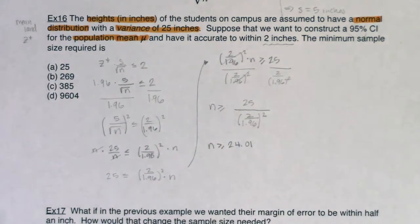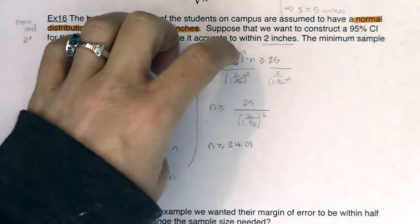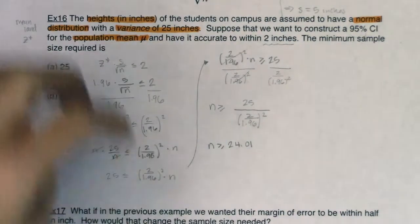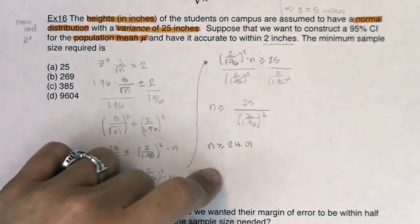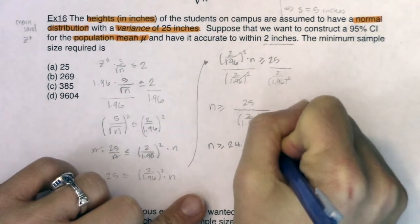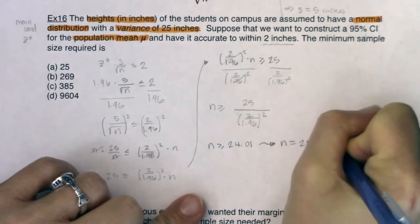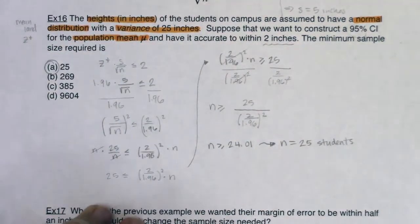So I'm going to get n is greater than or equal to 24.01. And the thing is, you have to have greater than or equal to 24.01 students in order to get within two inches of your population mean. And we're talking about students here. That's got to be a whole number. You can't survey 24.01 students. You need to survey a whole number. So that means I need at least 25 students. So that is the answer we're looking for there.